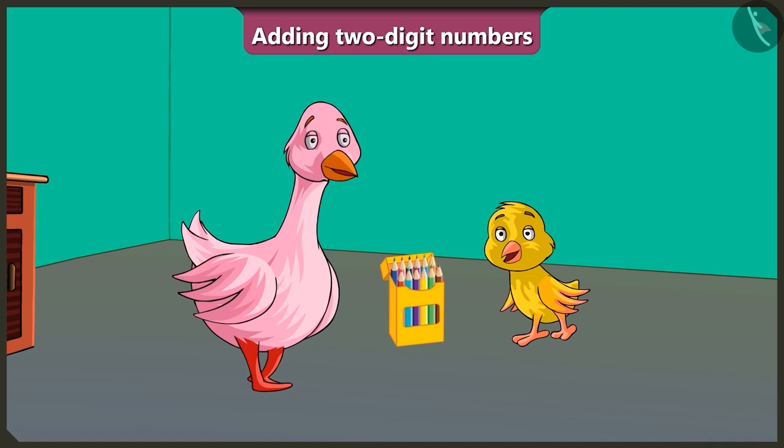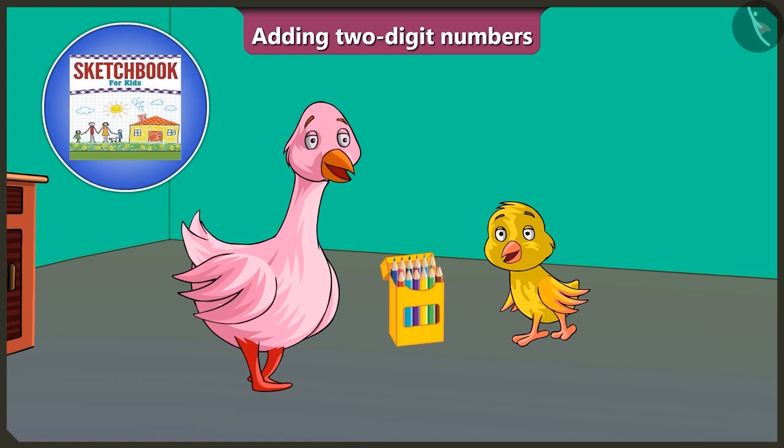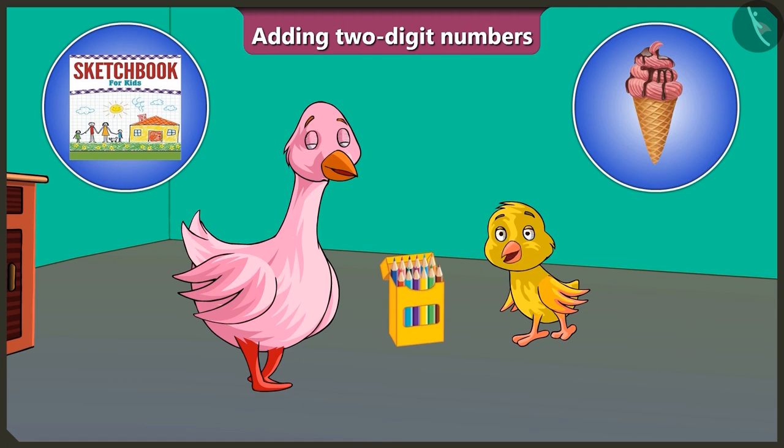Okay, Bilu, you go to the market and buy yourself a sketchbook and an ice cream. Oh, wow! Ice cream! Aunty, please give me some money to buy the two items.